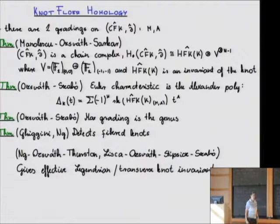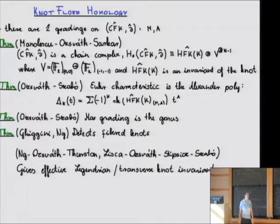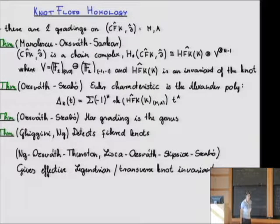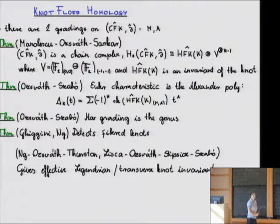An audience member asks where the boundary-squared equals zero is proven, and whether we work mod 2. Yes, I work mod 2; working over Z is a little bit more — actually much more — complicated. I should also mention that this homology is not quite invariant under stabilization of the grid: it depends on the size of the grid, but you can find an invariant out of the whole thing.